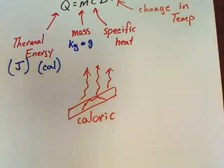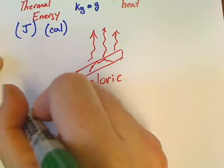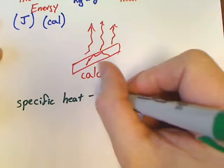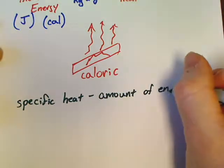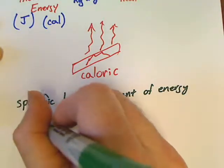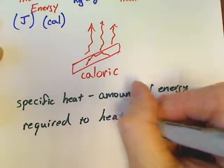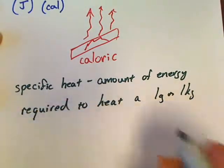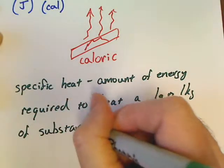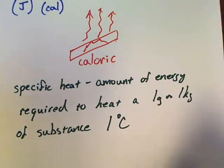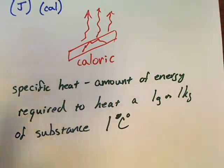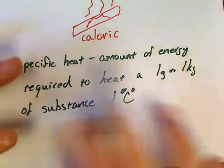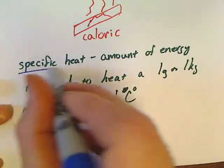Specific heat. Let's define it. Specific heat is, by definition, the amount of energy required to heat one gram or one kilogram of a substance one Celsius degree. In other words, it's asking: how hard is it to heat something up? Some materials heat up way easier than others, and every material has its very own specific heat.